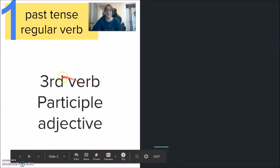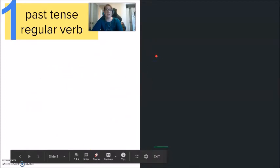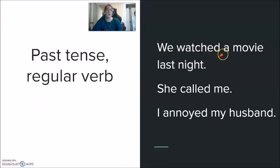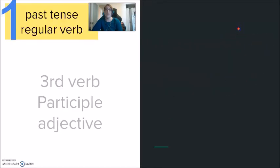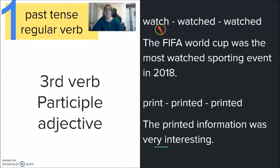-Ed can also be the third verb, participle, adjective. So again, if we go back and we think about this verb, we watched a movie last night. Watch is definitely the verb. This is an active sentence. We the subject. Action. Watched. Watched what? Movie. Object.